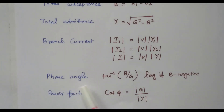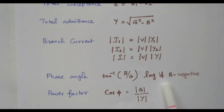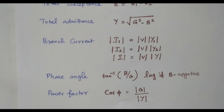The phase angle can be calculated as tan inverse of B by G. If B is negative, the circuit will be lagging. The power factor cos phi equals G by Y. In this video, we analyzed the parallel RLC circuit with two branches. We calculated impedance and reactance for branch 1 and branch 2, and also calculated conductance, susceptance, and admittance for each branch as well as for the total circuit. Thank you.